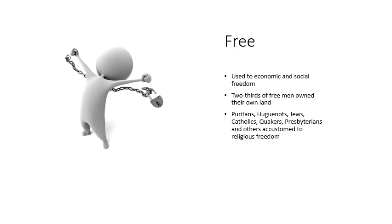Another pillar of American society is the idea of freedom. These people, having moved from England and Europe, settled in a world where it took months to get back and forth, giving them a lot of freedom to do things on their own. They became used to this economic and social freedom, to owning land and having property. Two-thirds of free men owned their own land. This became a big part of that freedom — the right to own your own property and control your way of life. Also the freedom of religion, so Puritans, Huguenots, Jews, Catholics, Quakers, Presbyterians, and others became accustomed to practicing their religion freely.